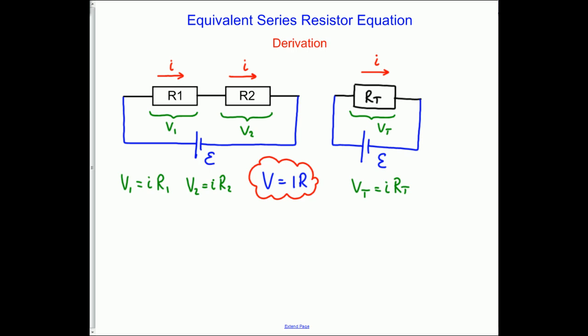Now we call up Kirchhoff's laws, and understand that in the left-hand circuit, the EMF is equal to the sum of the two potential differences, the two voltages. And in the right-hand circuit, it's trivial, the EMF is just equal to the one potential difference. But because these circuits are equivalent, they must be the same. So the EMFs are the same. So that allows us to combine our equations and write V1 plus V2 equals VT.